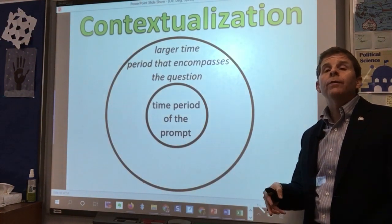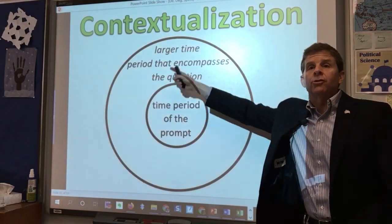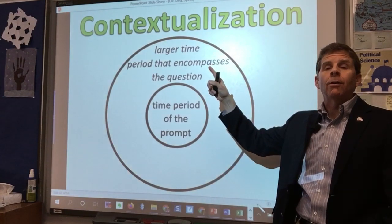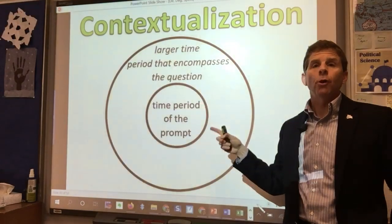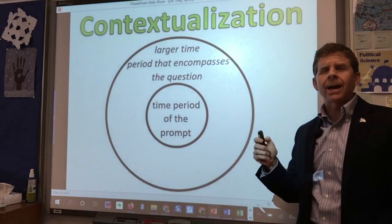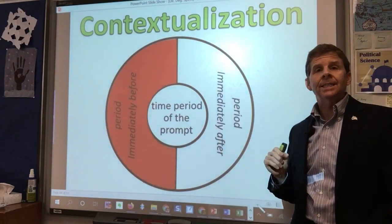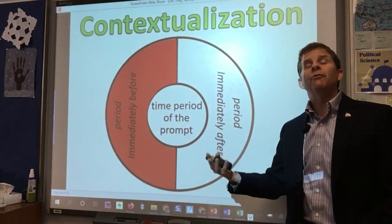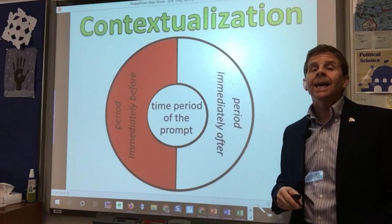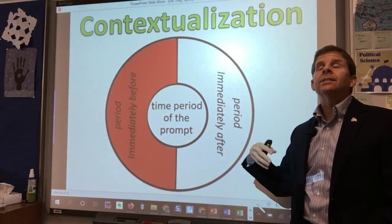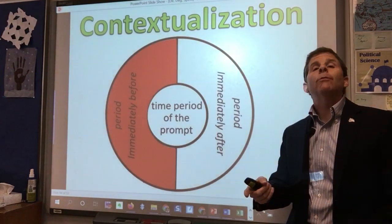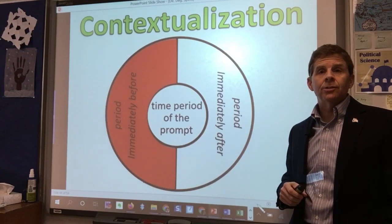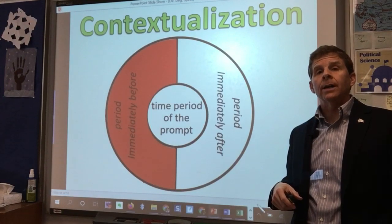For contextualization, no matter what the long essay or short answer prompt is, you've got to situate it in its historical context. The big donut — what you want to do ideally is come up with the time period of the prompt and then figure out what's the bigger time frame that totally encompasses the whole time of the prompt. If you can't do that, you're perfectly fine coming up with the immediately preceding period — what came before it that helps explain the time period. It's also okay to say what came after it. It's either/or — you don't have to do both. These are the big skills we're going to be working on between now and the test.